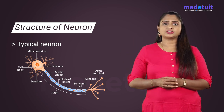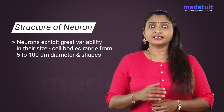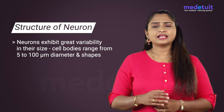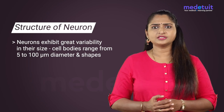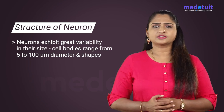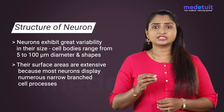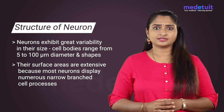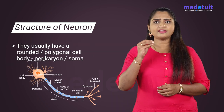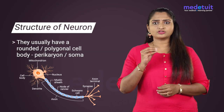Axon terminals or telodendria are present and synaptic knobs can be seen. Neurons exhibit a great variability in their size. Cell bodies can range from 5 to 100 micrometers in diameter and shapes. Their surface areas are extensive because most neurons display numerous narrow branched cell processes. They usually have a rounded or polygonal cell body, the perikaryon or soma.